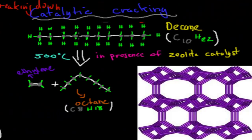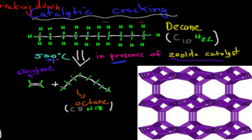And then catalytic cracking is similar. We have that decane — the 10-carbon chain. What we can do is use a zeolite catalyst. We put that decane in the presence of this catalyst — presence means it has to be close by. We also need temperatures, but less than thermal cracking. The other one was 750°C; this one's only 500 degrees Celsius. These catalysts have lots of space, so your decane molecules come into the middle of this catalyst.